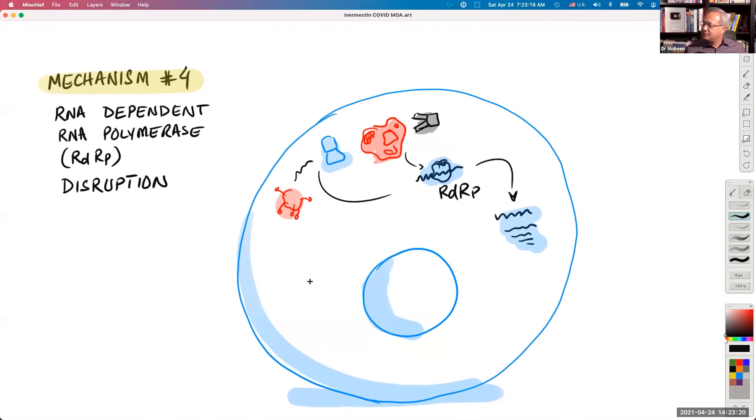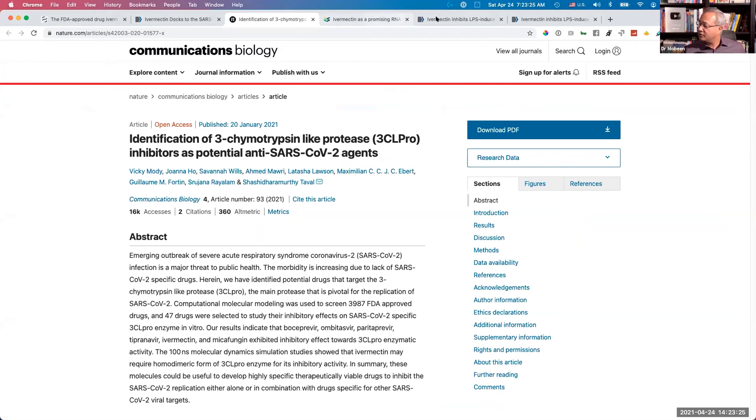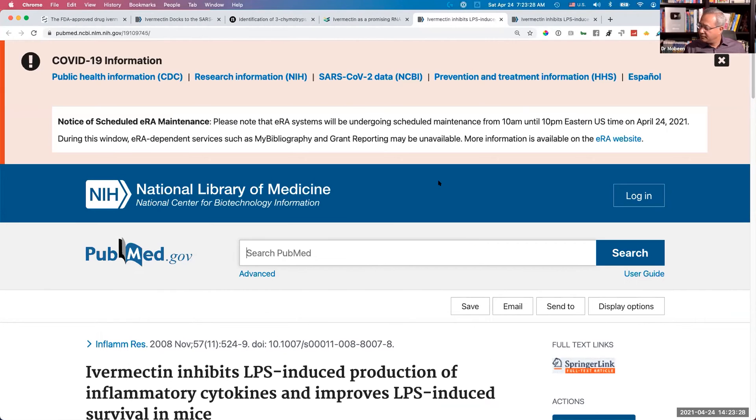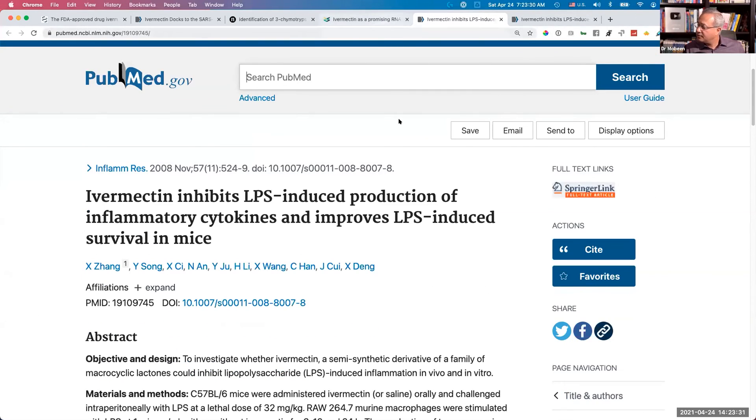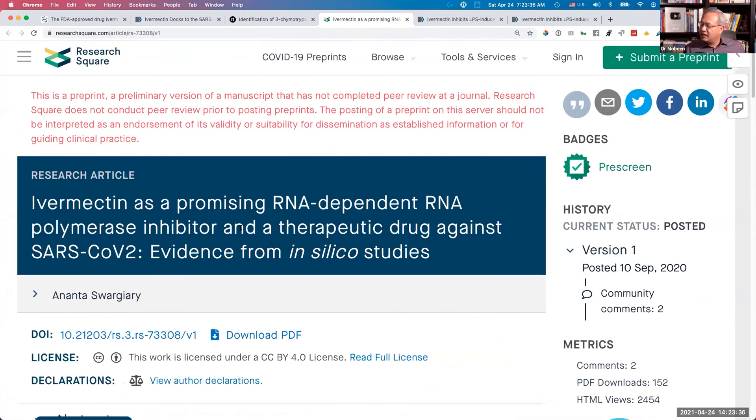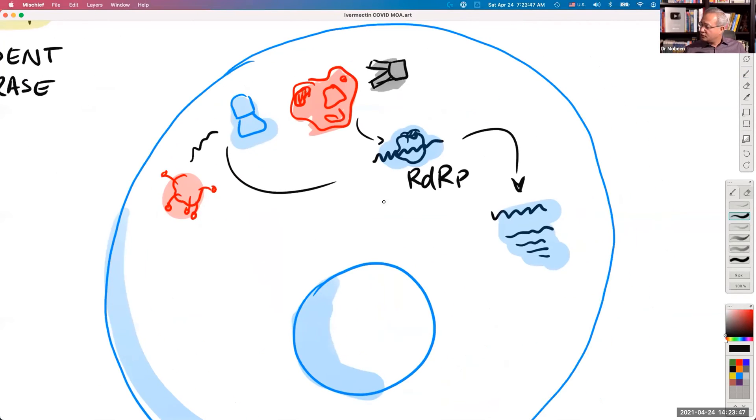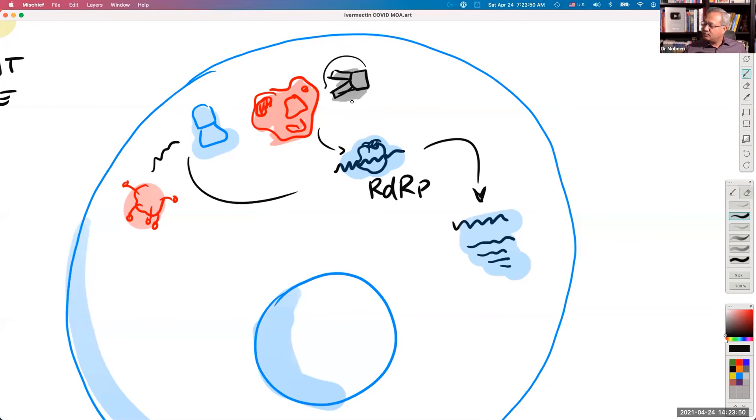Next mechanism is the RNA-dependent RNA polymerase disruption. So if you see this study, it is a preprint ivermectin as a promising RNA-dependent RNA polymerase inhibitor. So what happens is, this is an in silico study. If you continue to follow this mechanism, once these polyproteins have come in, and once they have started opening up into smaller enzymes, those smaller enzymes, one of them is the RDRP.